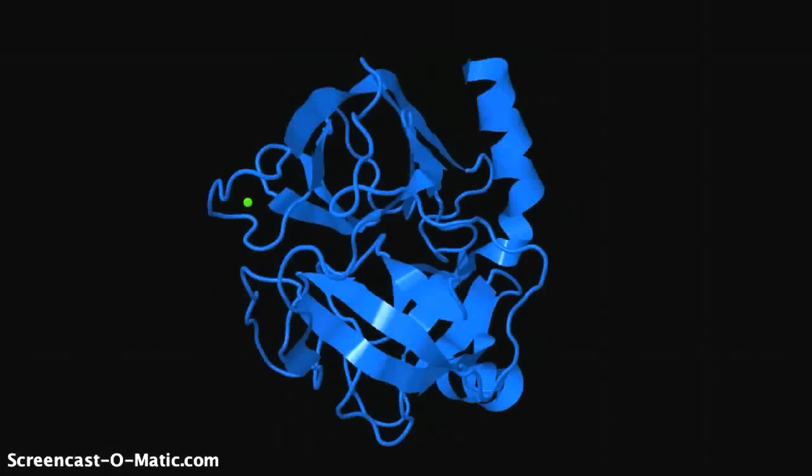As can be seen in this 3D depiction of trypsin by chain, the enzyme is made up of a single long polypeptide chain containing both alpha helices as well as beta sheets.